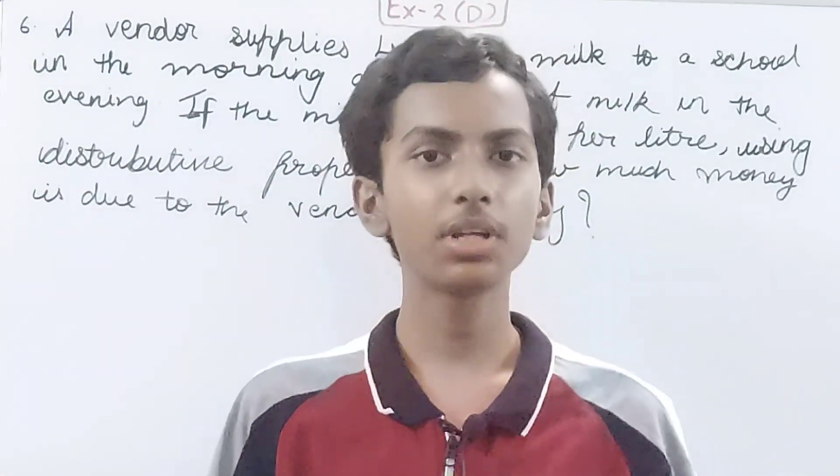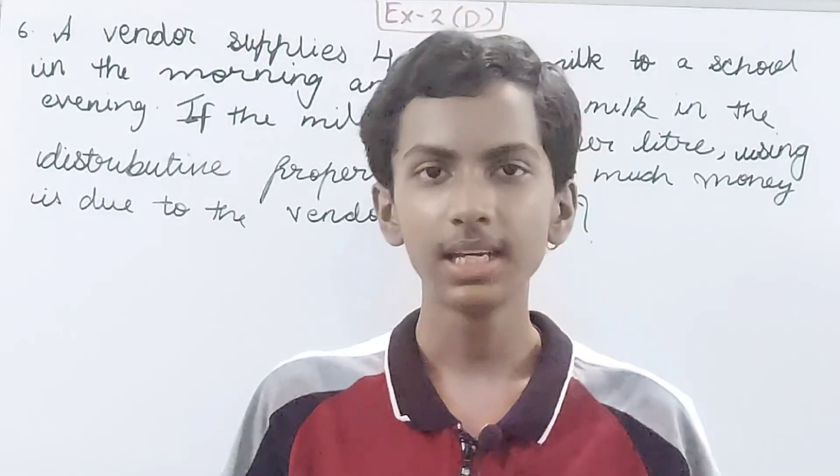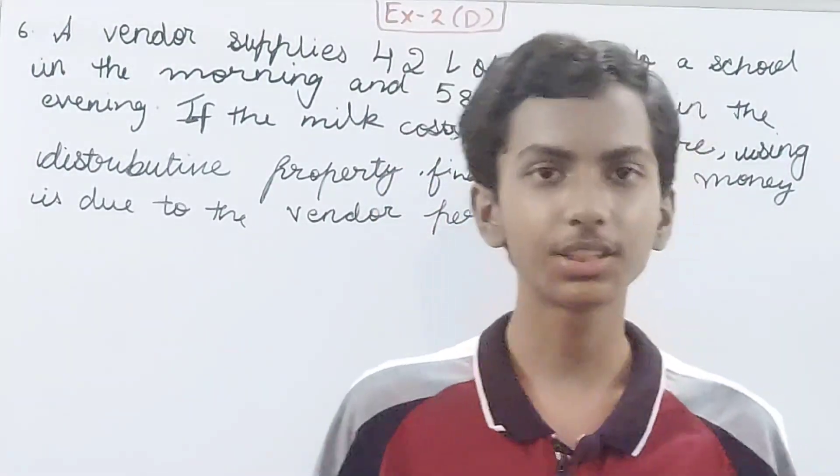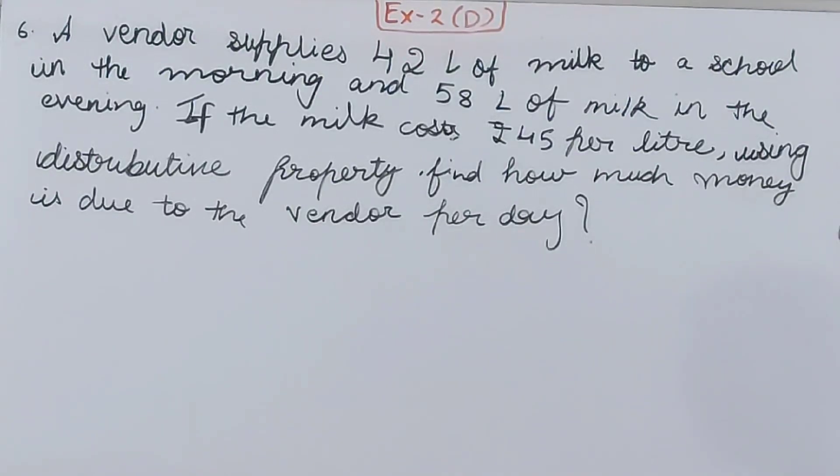Hello friends, welcome back to my YouTube channel. In this video we are going to solve ICSE Mathematics Class 6, Chapter 2 Whole Numbers, Exercise 2D, Question 6. A vendor supplies 42 liters of milk to a school in the morning and 58 liters of milk in the evening. If the milk costs rupees 45 per liter, using distributive property...